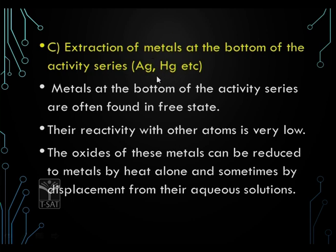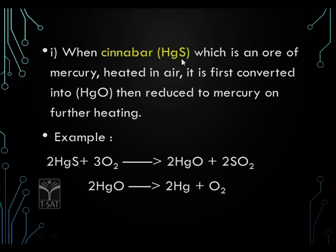As these metals are less reactive, if they combine with oxygen they form metal oxides, which can be easily reduced by heat itself and even by displacement reactions. For example, cinnabar (mercury sulphide), which is an ore of mercury, when heated in air is first converted into mercuric oxide. This mercuric oxide can be reduced to mercury on further heating. When cinnabar reacts with oxygen in excess, it forms mercuric oxide and sulphur dioxide.